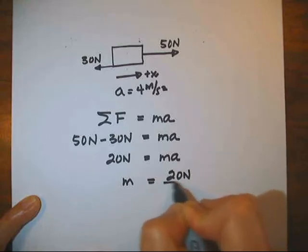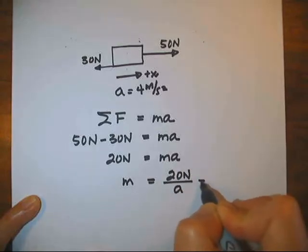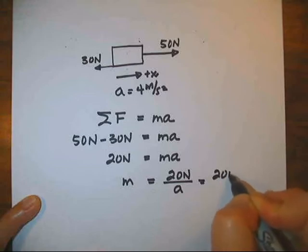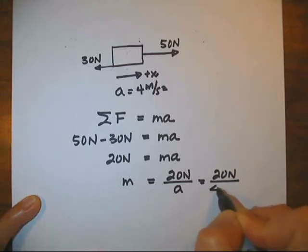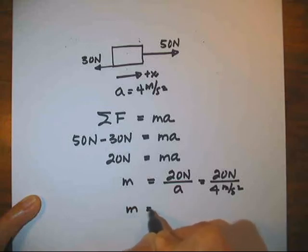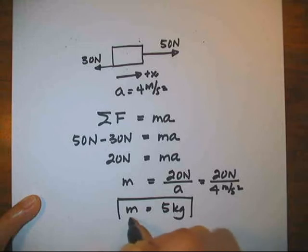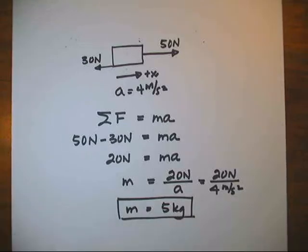By the way, it doesn't matter whether you draw the arrows on the top, middle, or bottom of the block. In the book, they show the 30 newton force on the bottom edge of the block. This indicates that the force is due to friction between the block and the table.